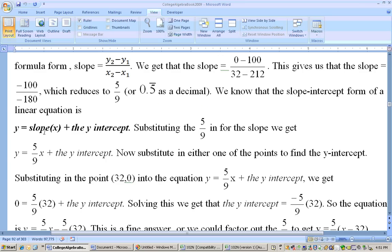Okay, so now we've got the slope in the slope-intercept form, and now all we need to do is get the y-intercept. So, I can substitute the five ninths in for where the slope is, and now I need to substitute a point in to get the y-intercept.